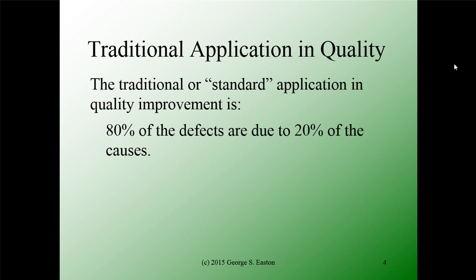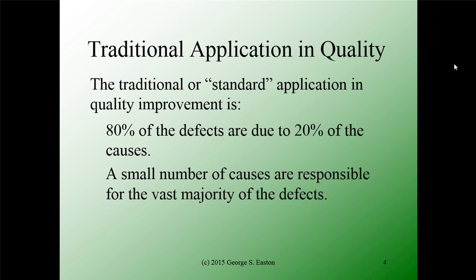What Juran did was take this idea and apply it in the context of quality control and manufacturing. The traditional application of the Pareto Principle is that 80% of the defects are due to 20% of the causes. More abstractly, a small number of causes are responsible for the vast majority of the defects. If you look at a process and examine potential causes of defects, the vast majority of the defects will be due to a very small number of the possible causes.